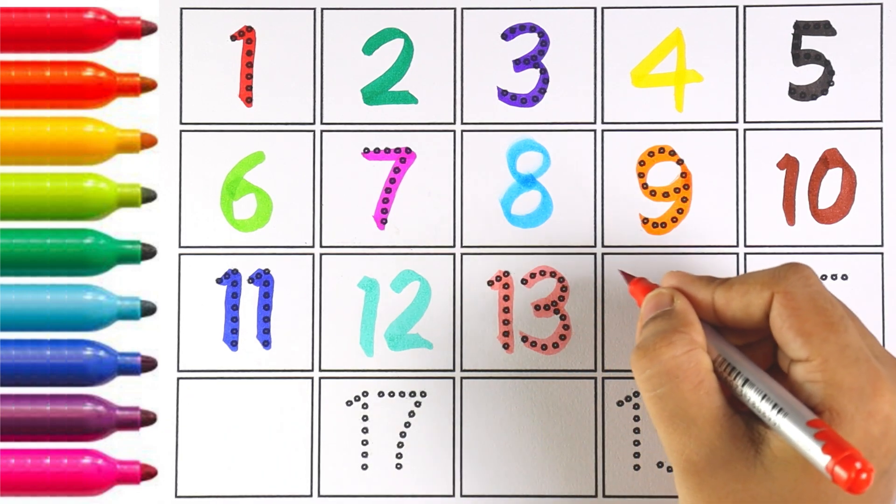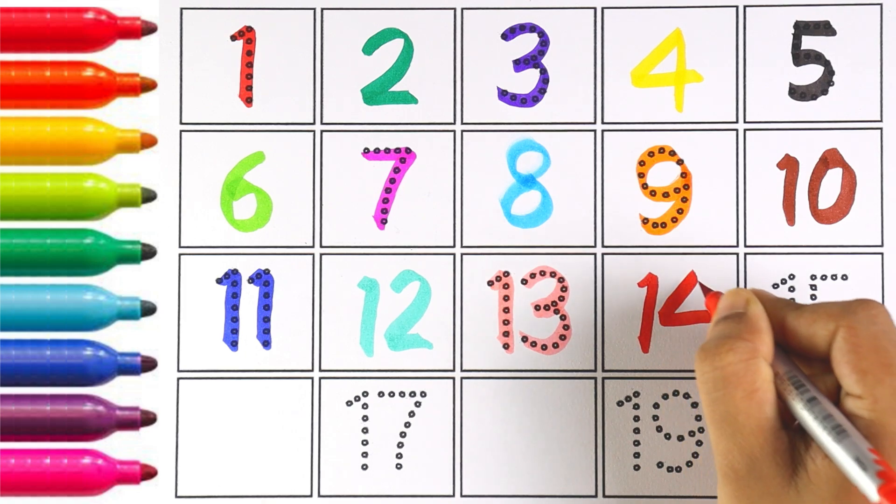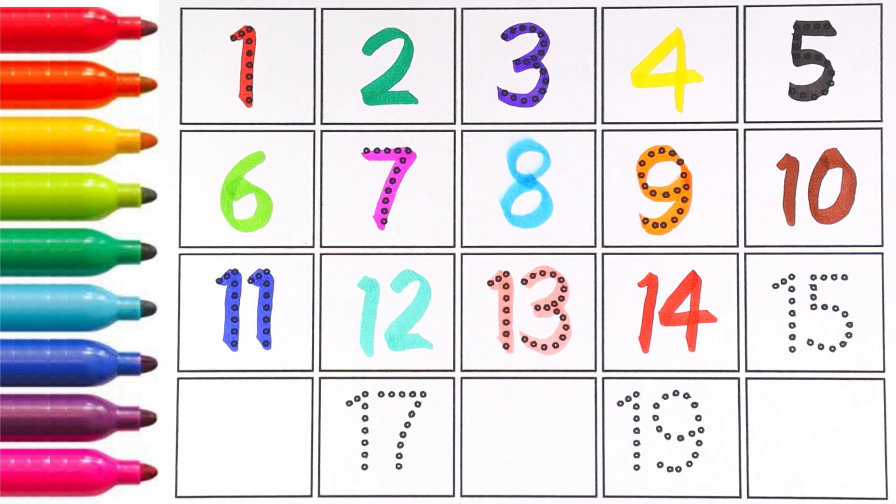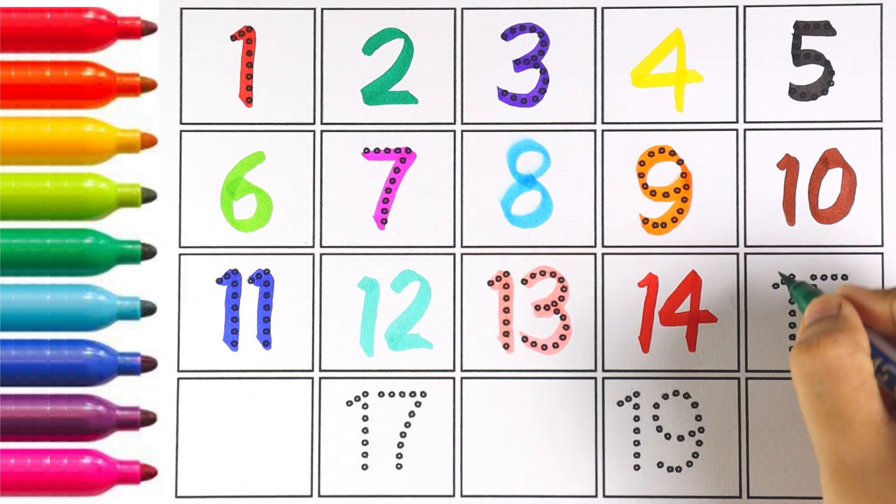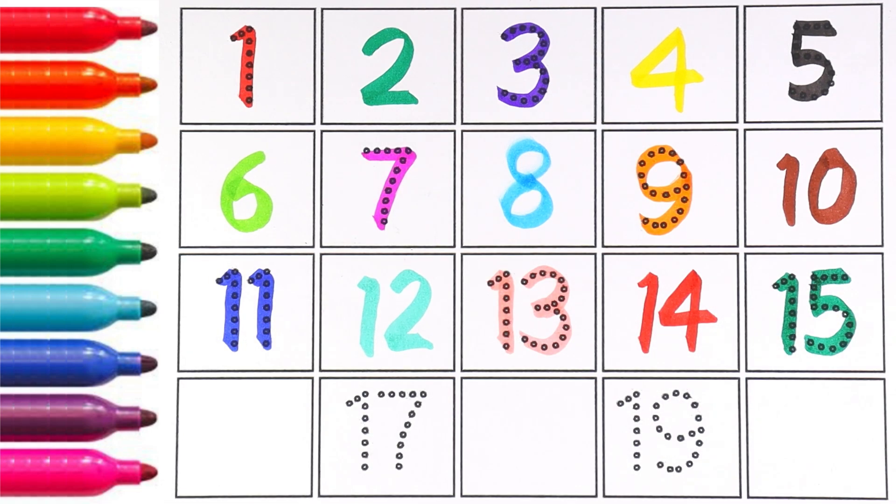Number fourteen. One and four make the number fourteen. Number fourteen. Number fifteen. One and five makes the number fifteen. Number fifteen.